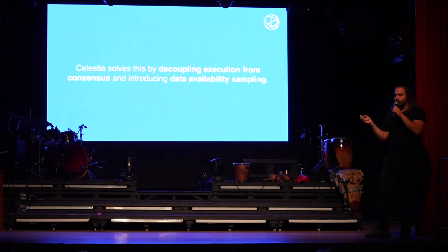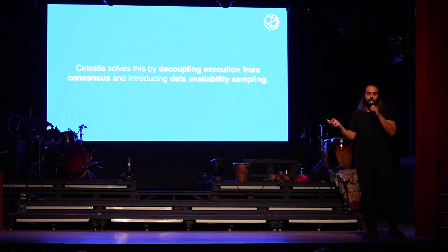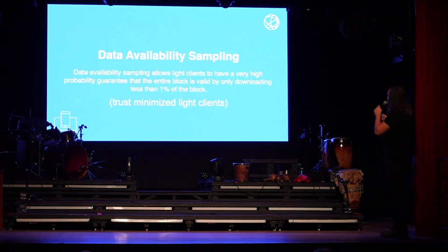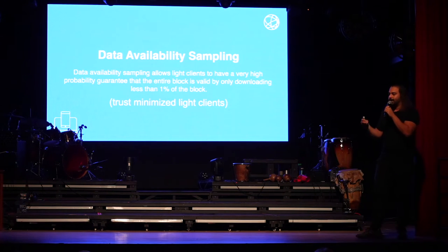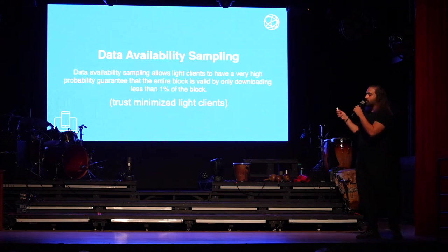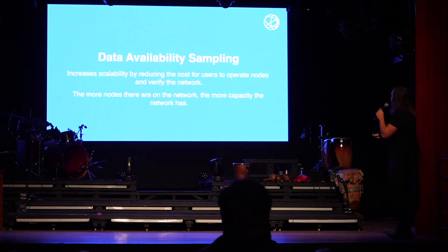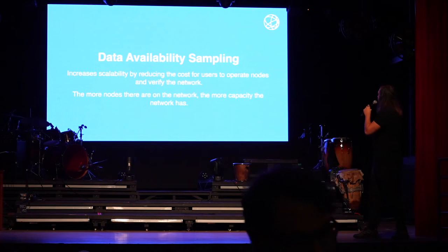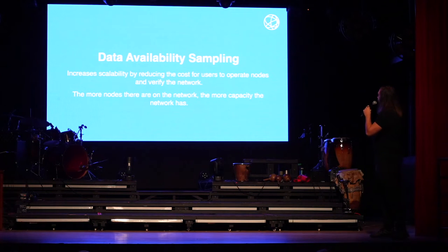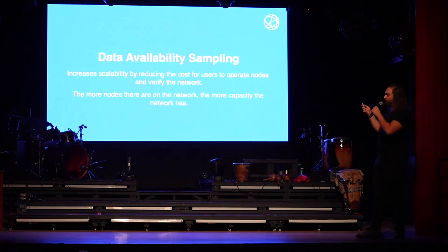Celestia solved this by decoupling execution from consensus and introducing what we call data availability sampling. With data availability sampling, a light client can check less than 1% of a block in order to verify whether the block is valid. This is what we call a trust-minimized light client. It improves scalability by reducing the cost per user to operate nodes and verify the network. The more light nodes in the network, the bigger the block can be - you can actually increase the block size.